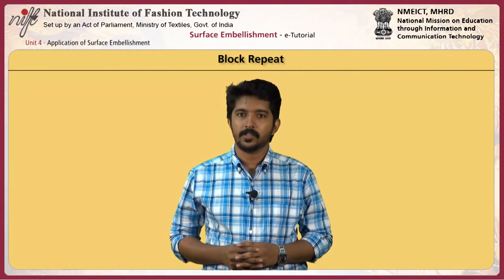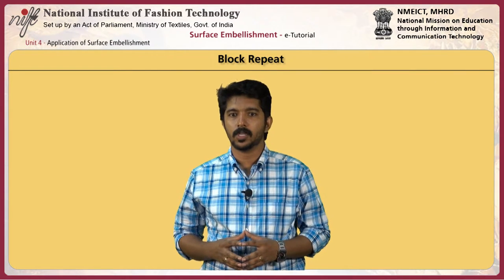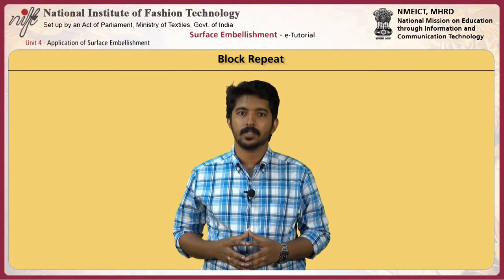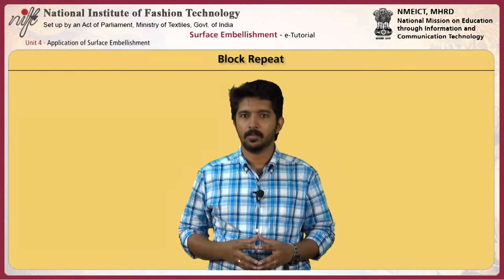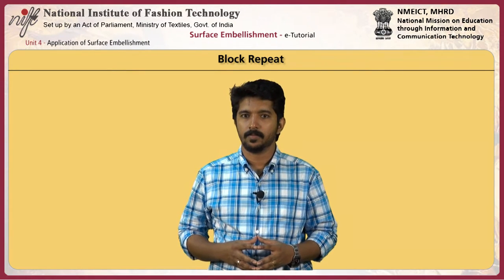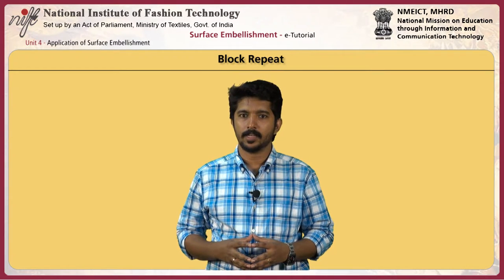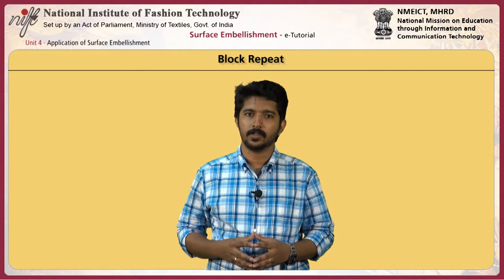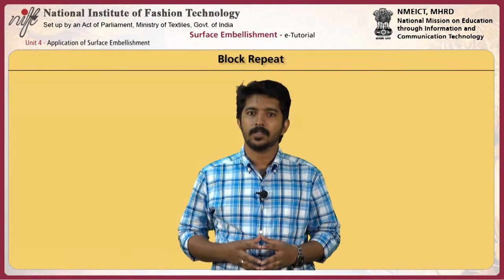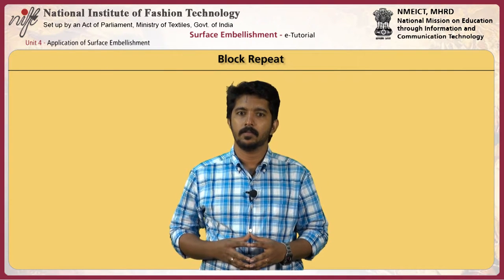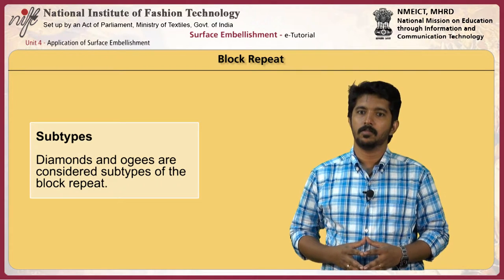The design can be spaced with background completely separating the motifs, or motifs can be packed and connected together. There are very simple variations to the basic block repeat that add interest and flow — overlapping the repeat unit, flipping alternating motifs, or making it continuous. For example, flowers connected by sinuous vines might be all that's needed to make a pleasing design. Diamonds and ogees are considered subtypes of the block repeat.